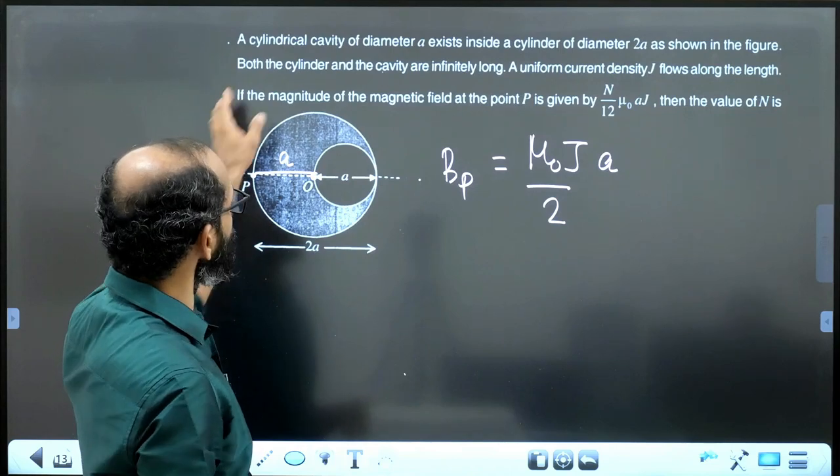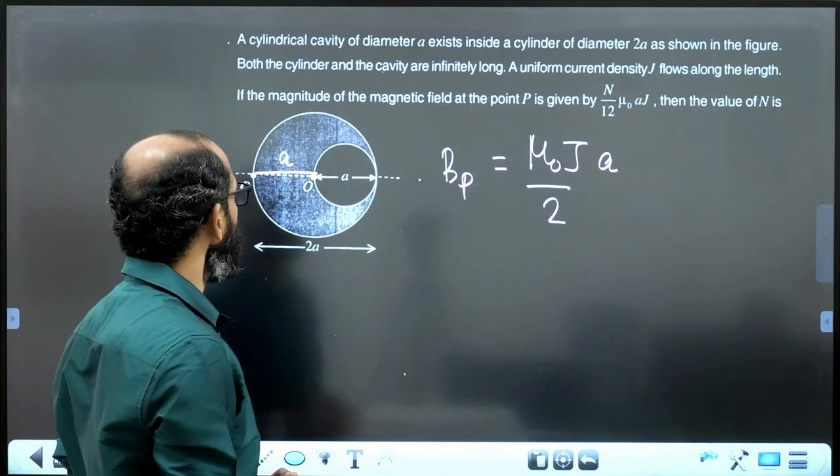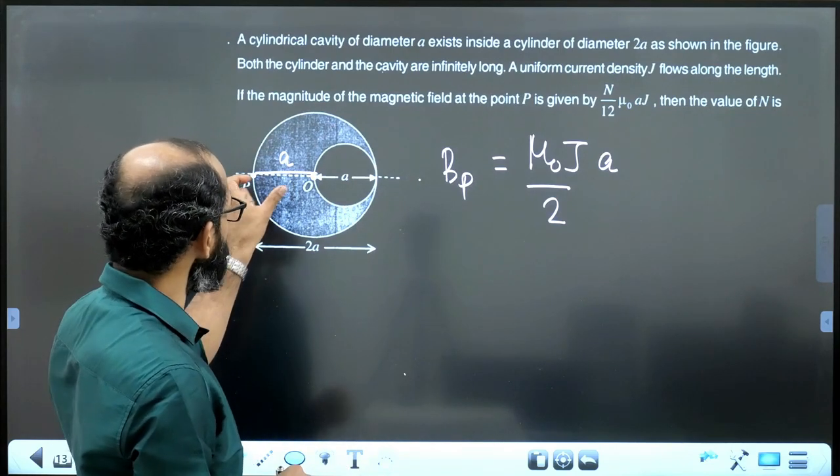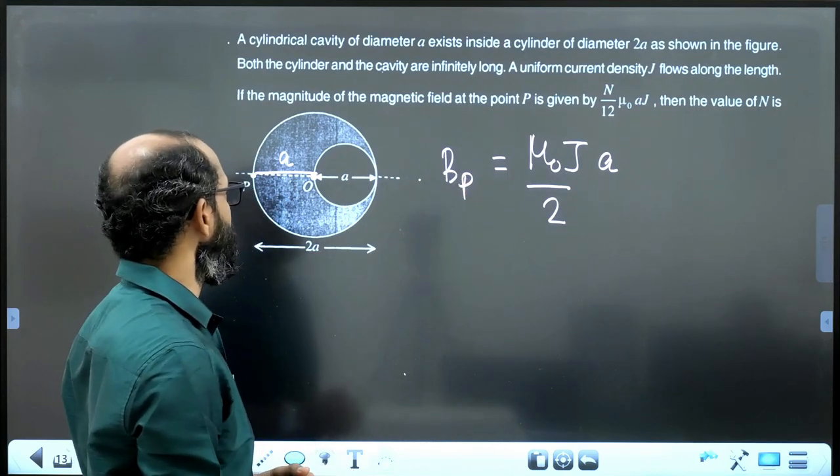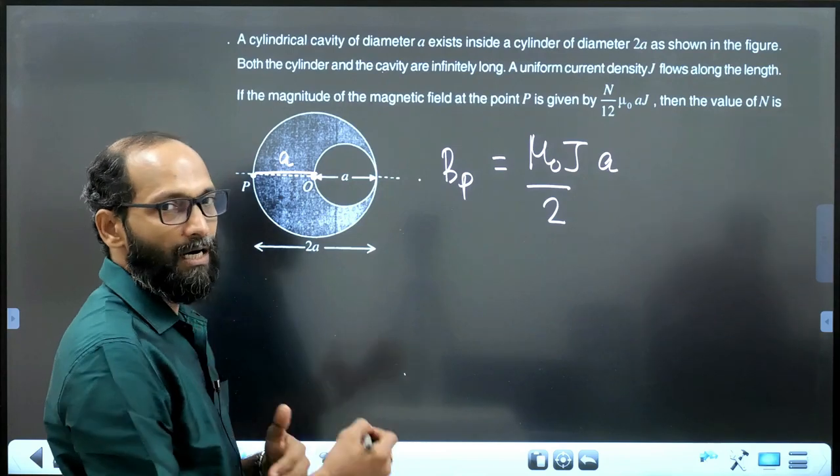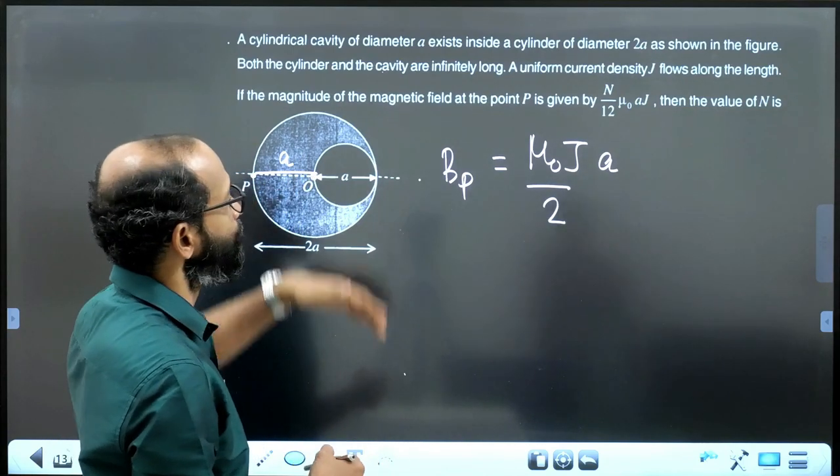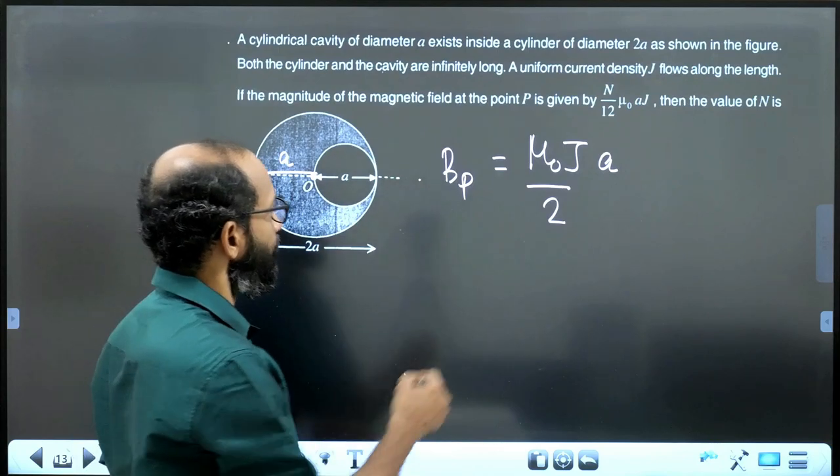So, field at P due to the entire uniformly current carrying wire having radius A, diameter 2A, current density is a constant, is mu0J by 2 into R, where R is the radius itself of the uniform wire. So, mu0JA by 2 minus,